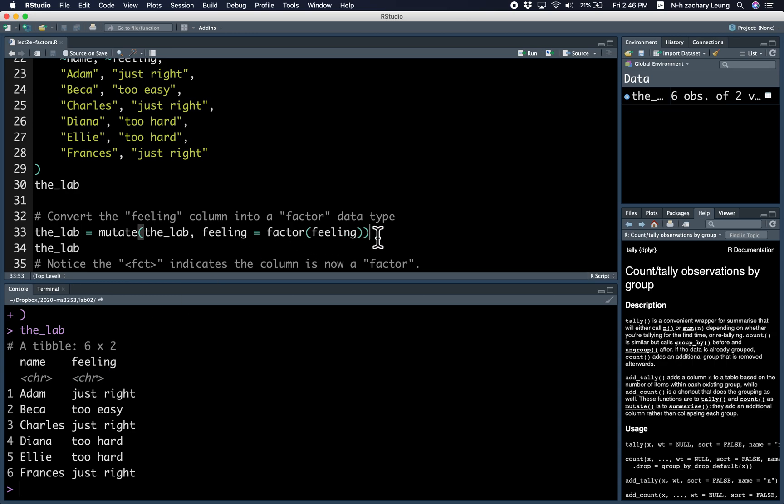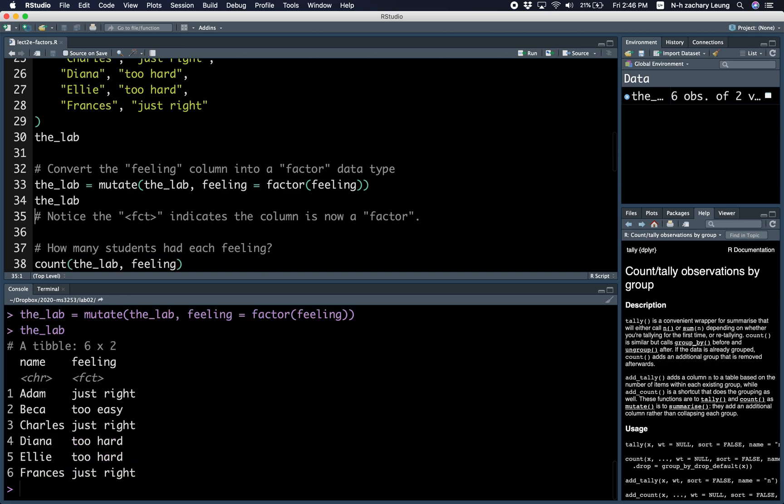You can convert it into a factor data type using the factor function like so. Now notice that feeling is a factor column rather than a character column, as indicated by FCT.